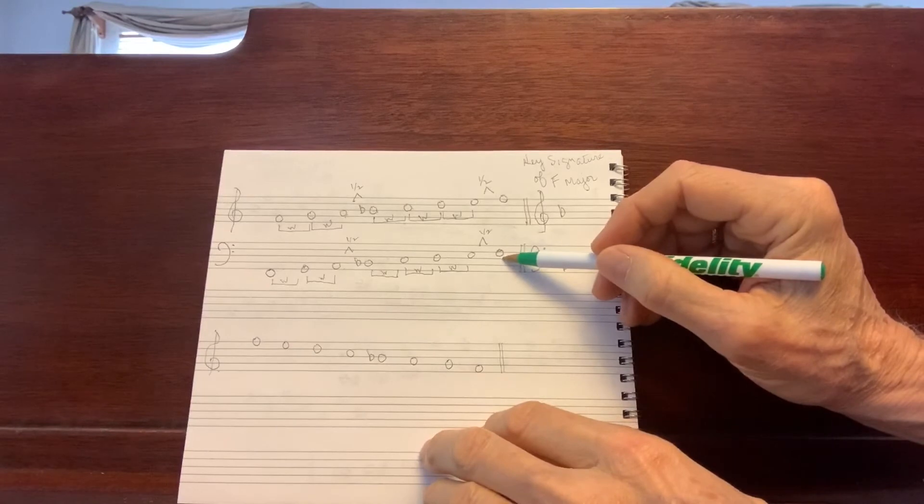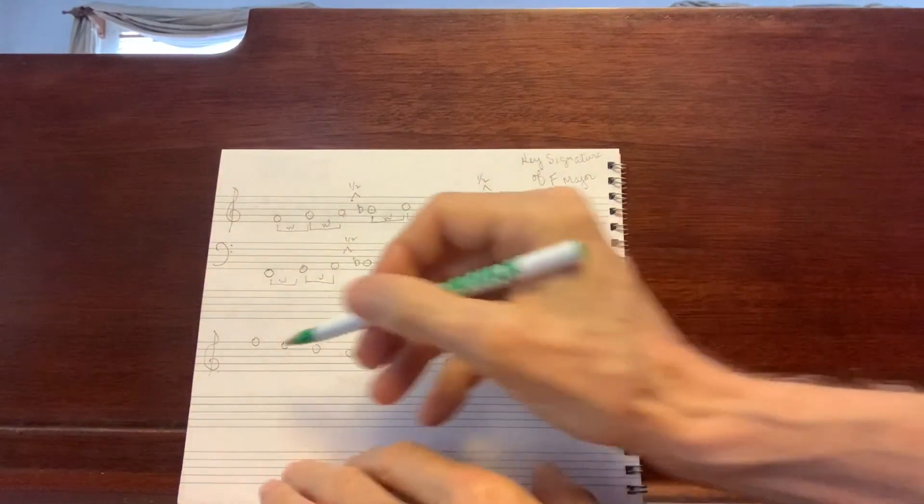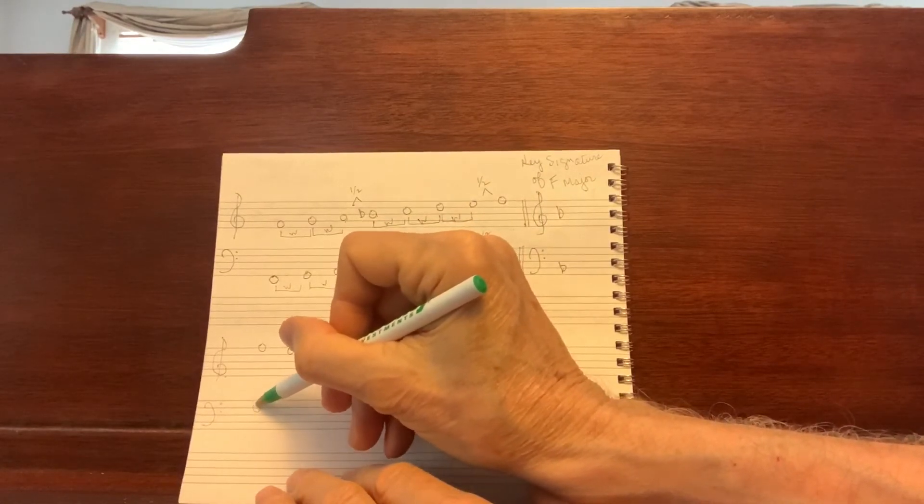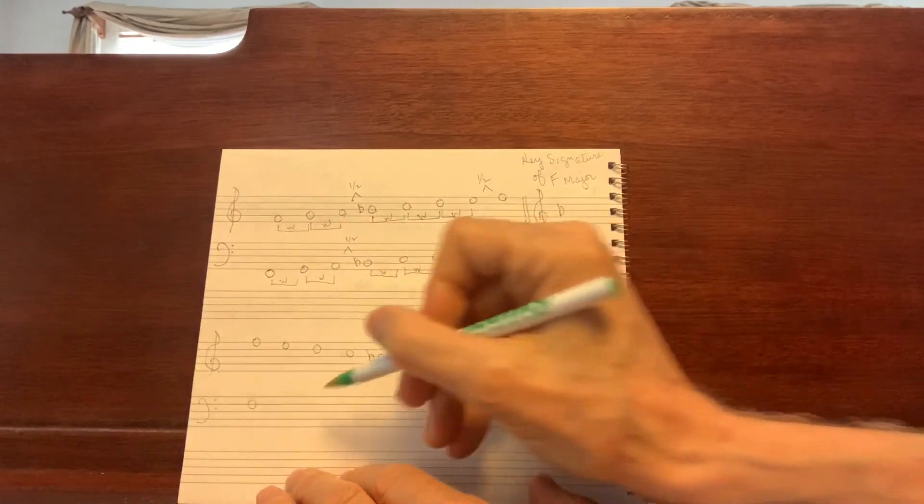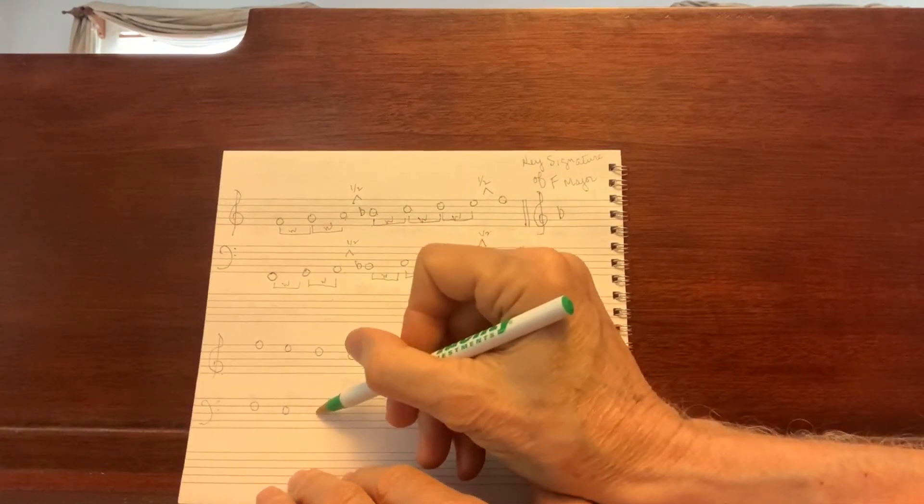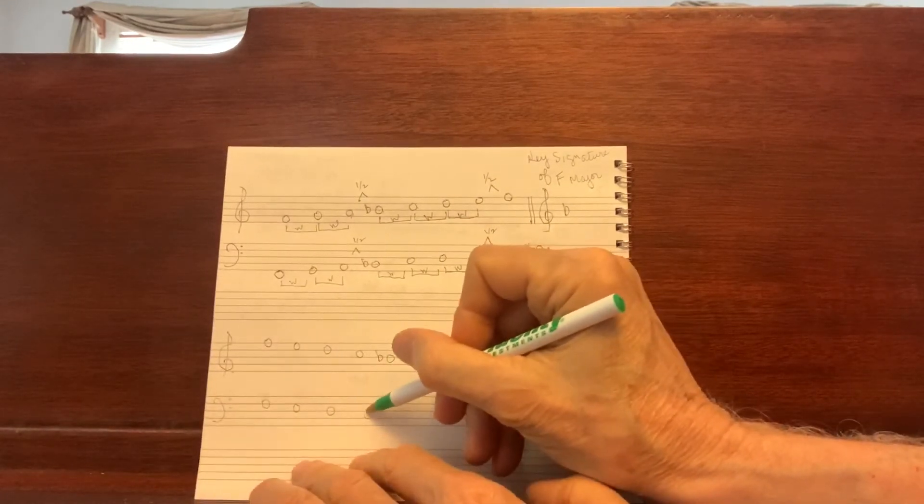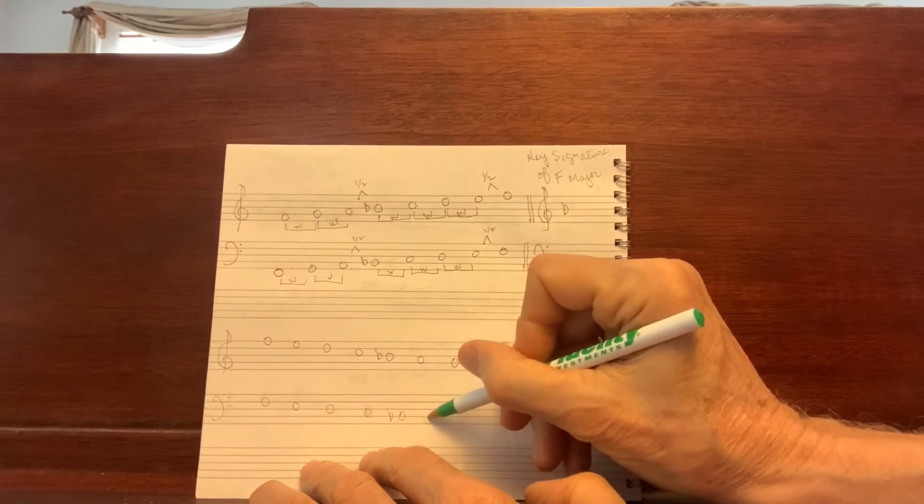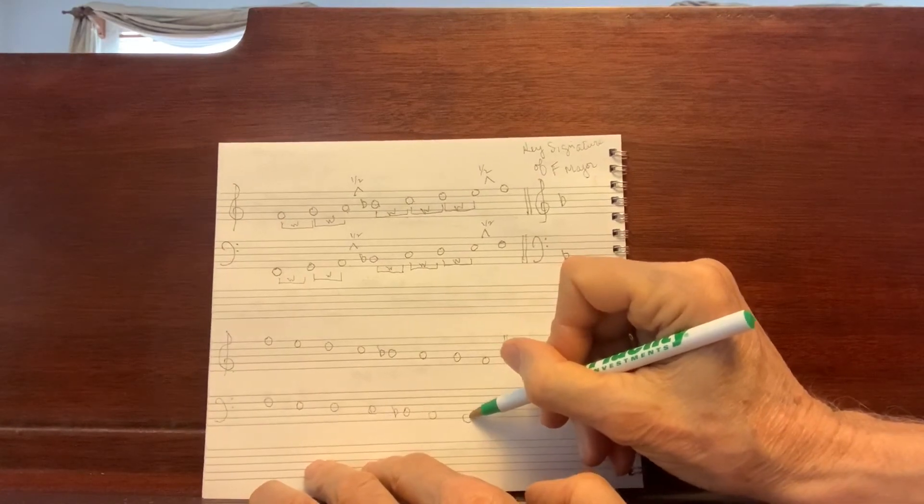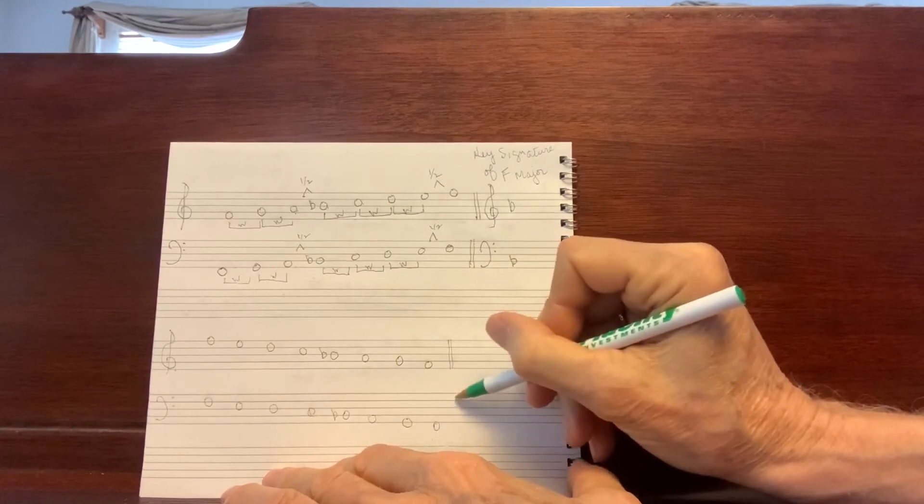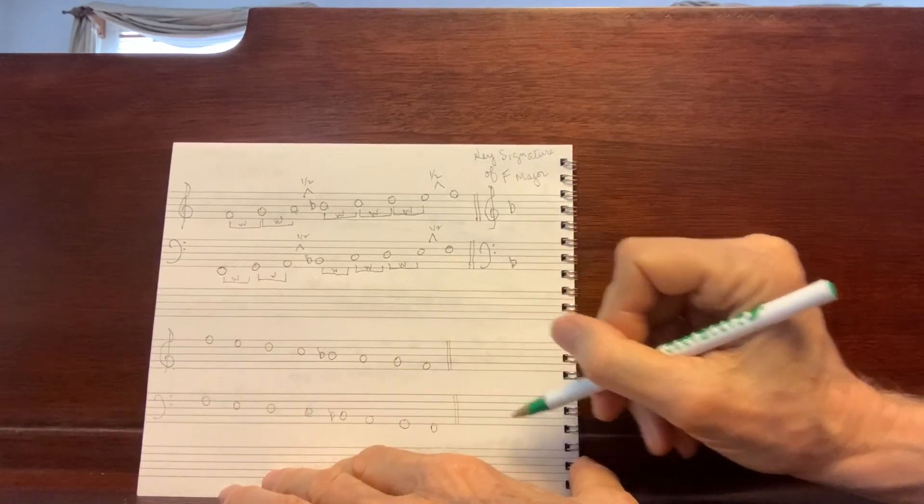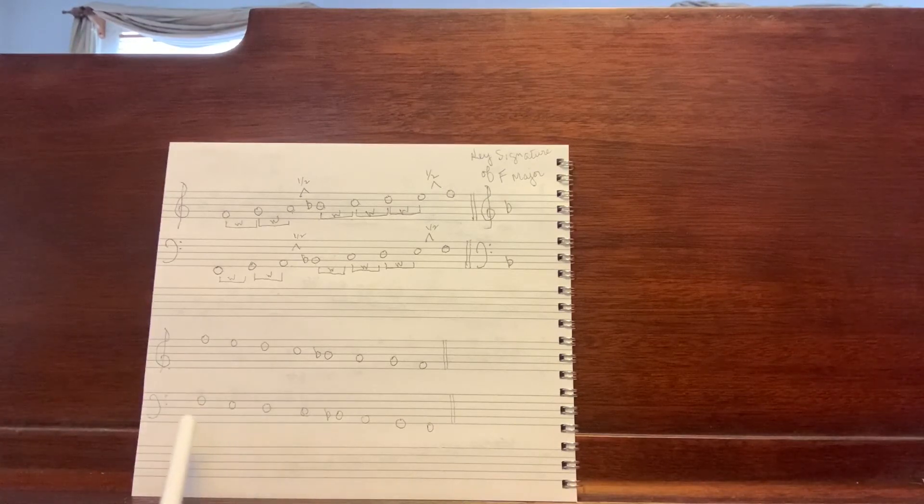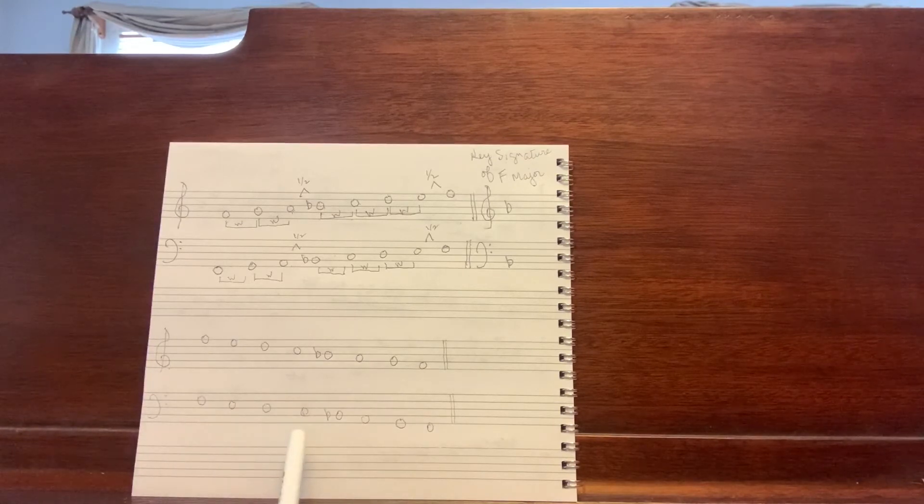And now we'll take the bass clef descending. F, E, D, C, etc. We'll start on the fourth line. There's our F clef. Here's the fourth line, F, which the F clef signifies as being F. And down we go: F, E, D, C, B. Make it a flat. A, G bottom line, and F. And let's try reciting. F, E, D, C. Faster.